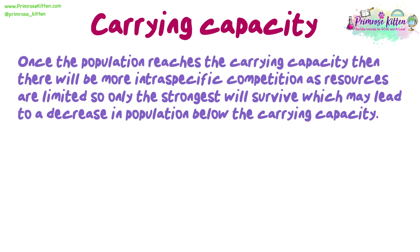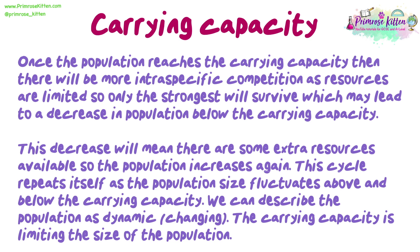Once the population reaches the carrying capacity, there will be more intraspecific competition as resources are limited, so only the strongest will survive, which may lead to a decrease in population below the carrying capacity. This decrease means some extra resources become available, so the population increases again. This cycle repeats itself as the population size fluctuates above and below the carrying capacity — we can describe the population as dynamic, i.e. changing. The carrying capacity is limiting the size of the population.